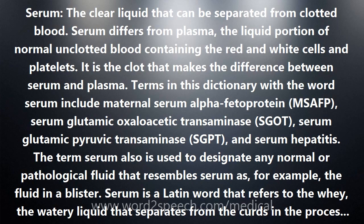Serum is the clear liquid that can be separated from clotted blood. Serum differs from plasma, the liquid portion of normal unclotted blood containing the red and white cells and platelets. It is a clot that makes the difference between serum and plasma.